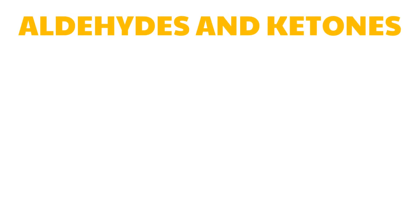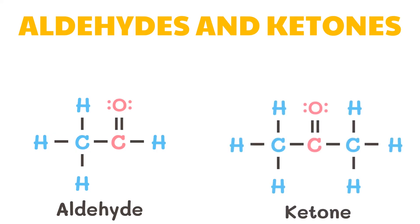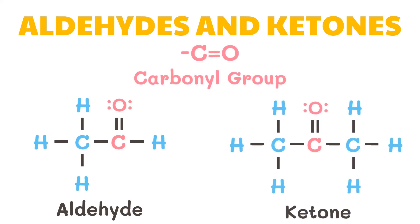Another group of organic compounds are aldehydes and ketones. Aldehydes and ketones, in combination with other functional groups, are widely available in nature. Aldehydes and ketones contain the carbonyl group. In aldehydes, the carbonyl group is located at the terminal end of the molecule. Whereas, in ketones, the carbonyl group is located anywhere between the two terminal ends of the molecule.